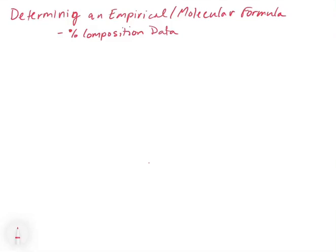In this video, we're going to explore how we can determine an empirical or a molecular formula from experimental data. There are two main ways that we can do this: one involves percent composition data, and the other involves elemental analysis.